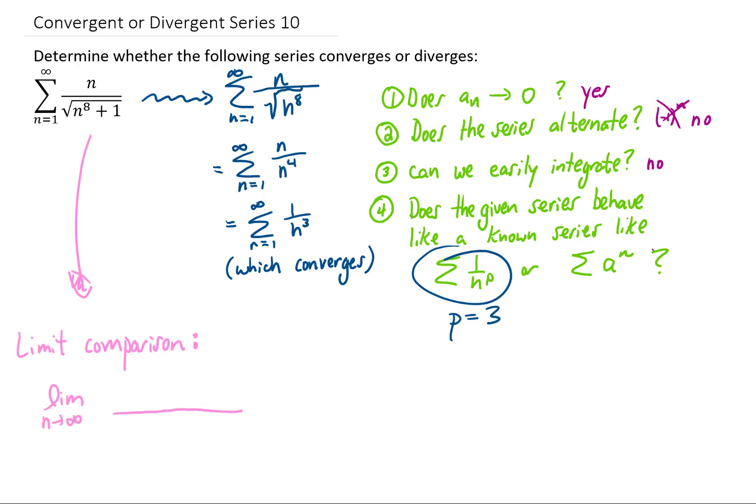We're going to take a limit, as n goes to infinity, of the sequence inside of our original series divided by the series that we're comparing to. In this case, we're comparing to 1 over n cubed. Flipping over that 1 over n cubed and multiplying gives us an n to the 4th in the numerator.